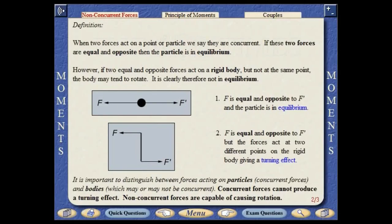When two forces act on a point or particle, we say they are concurrent. If these two forces are equal and opposite, then the particle is in equilibrium. However, if two equal and opposite forces act on a rigid body but not at the same point, the body may tend to rotate, and is therefore not in equilibrium.